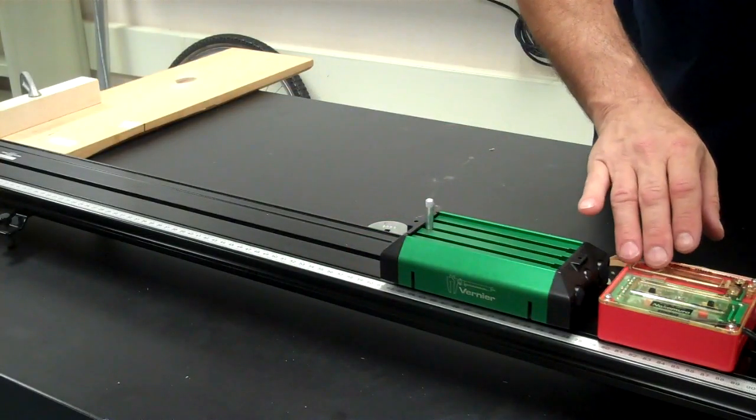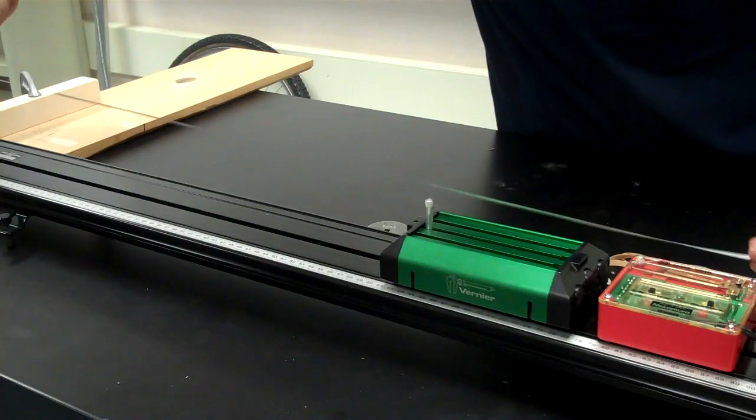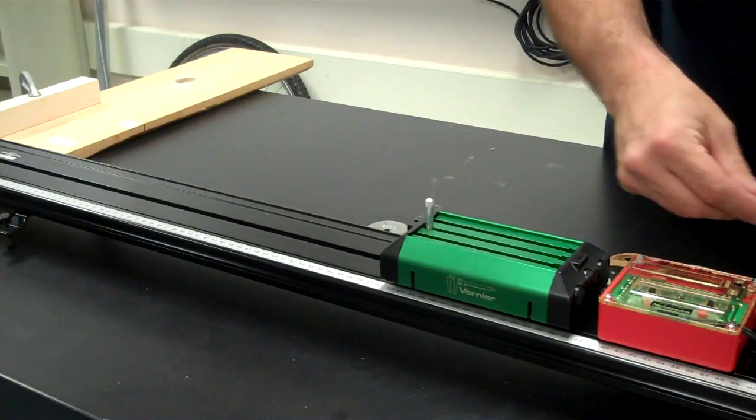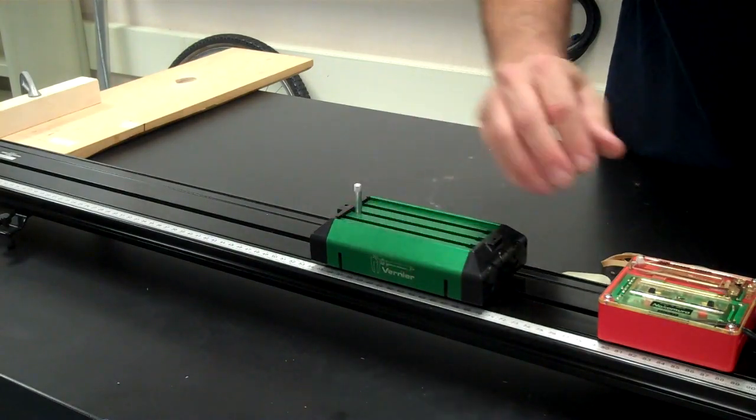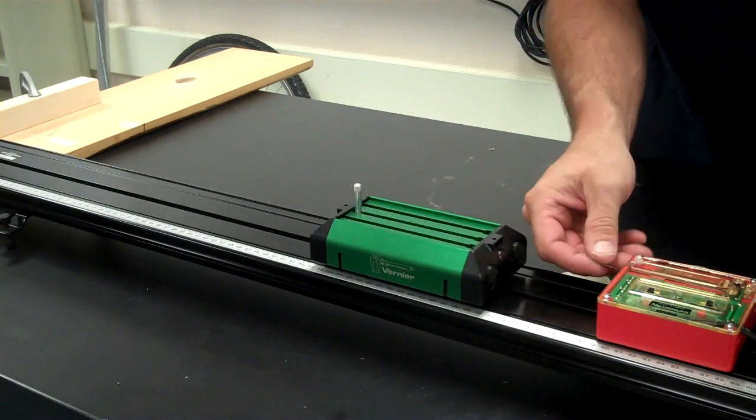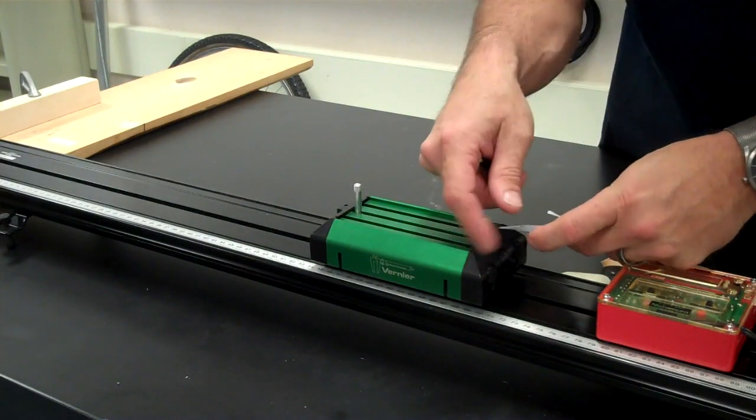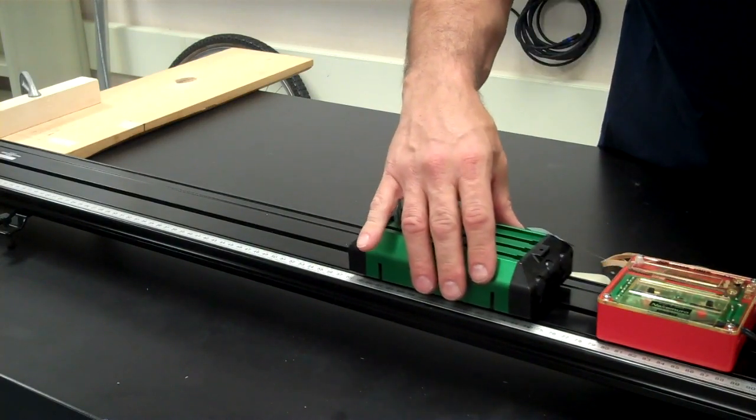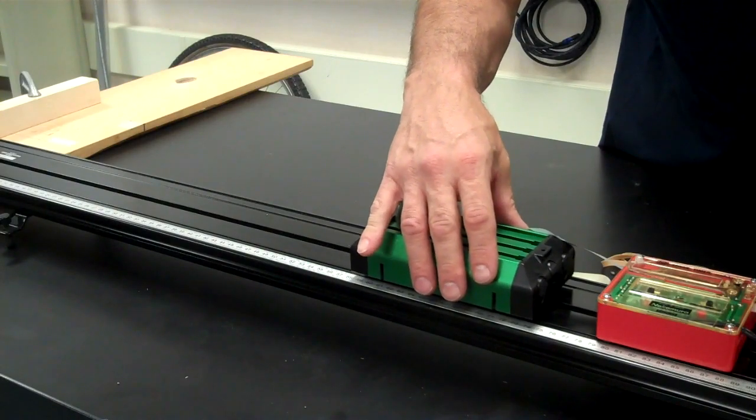So the way the ticker timer works is, get a piece of ticker tape about this long, run it through the ticker timer like so, and then with a piece of tape, attach it to your cart.